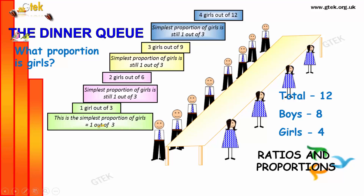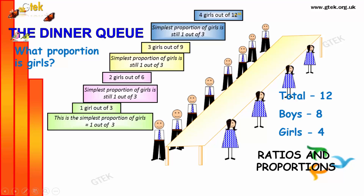The proportion is 1 out of 3. 2 girls out of 6 is simplified as 1 out of 3, because both are divided by 2. And 3 girls out of 9 — both are divided by 3 — so 1 out of 3 once again. And 4 girls out of 12, divided by 4, automatically you get 1 out of 3. The proportion of girls is 1 out of 3 people. This is your proportions.